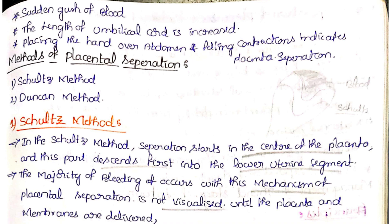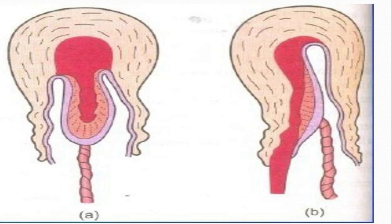Next, methods of placental separation — mainly two methods: the Schultze method and the Duncan method. In the Schultze method, separation starts in the center of the placenta and this part descends first into the lower uterine segment. The majority of bleeding occurs but is not visualized until the placenta and membranes are delivered, because the central point separates first.